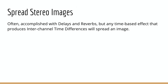Spread stereo images can happen a couple of different ways. They can happen during production because we chose microphone arrays that capture interchannel time differences — for example, a spaced pair, a Decca Tree, an ORTF, NOS, or DINA. Any of the hybrid or spaced pair techniques will produce interchannel time differences and, as a result, interchannel time differences, which will translate to interaural time differences for the end listener in the sweet spot.